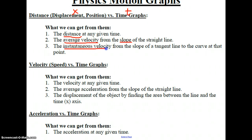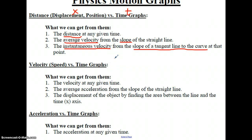We can also get the instantaneous velocity from the slope of the tangent line to the curve at that point. If our best fit line is not a straight line but a curve instead, we can't get average velocity because the velocity is changing. But we can use a tangent line to get the instantaneous velocity using the slope of the tangent, and I'll demonstrate that for you later.